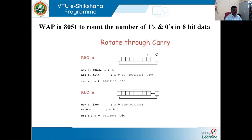Let us look at the first program: write an assembly language program in 8051 to count the number of ones and zeros in an eight-bit data byte. Before writing the program, let us quickly review the rotate instruction — rotate through carry. You can use either RRC A or RLC A. RRC stands for rotate right through carry, whereas RLC stands for rotate left through carry.